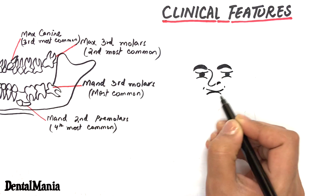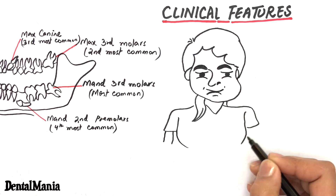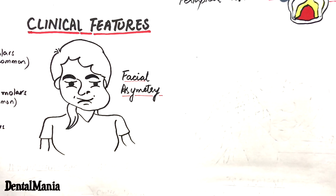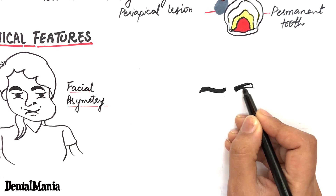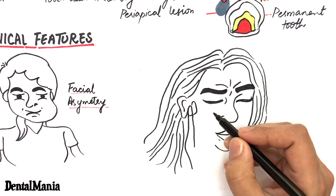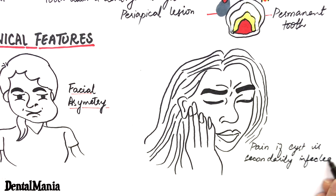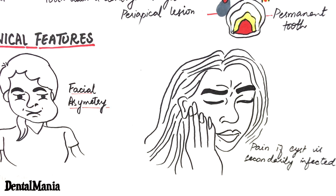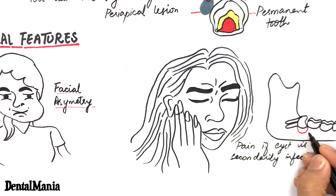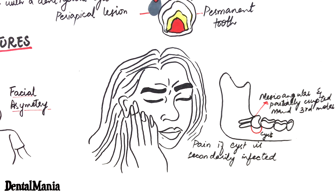Dentigerous cysts can grow to a considerable size, causing painless expansion of the jaws and resulting in facial asymmetry. In some cases the cyst may become secondarily infected and patients may experience pain. Such painful and infected cysts are mostly associated with partially erupted mesoangular mandibular third molars.